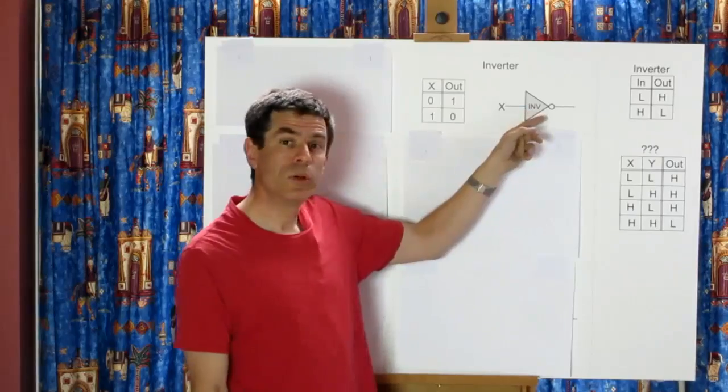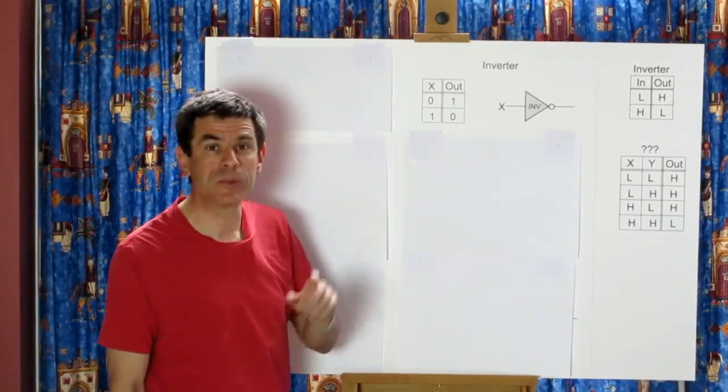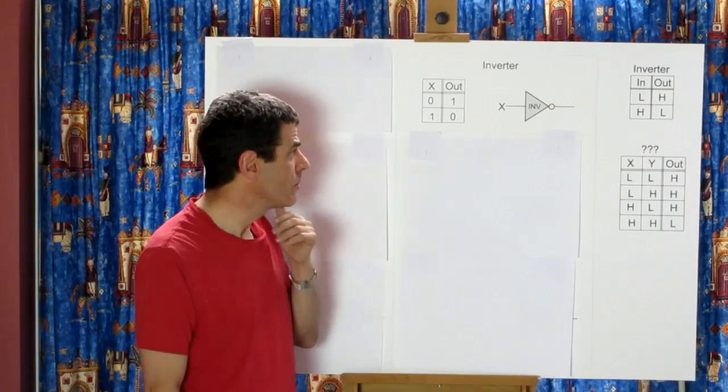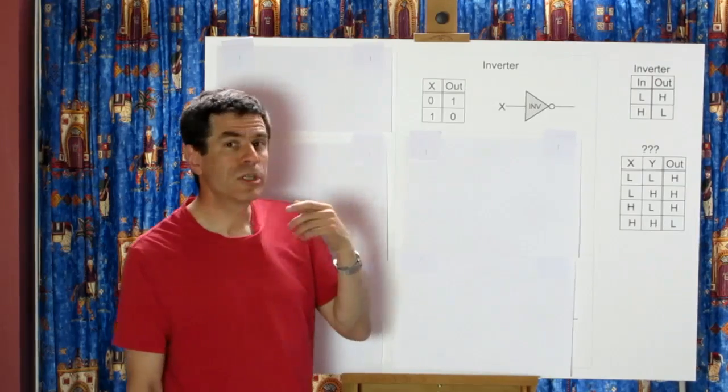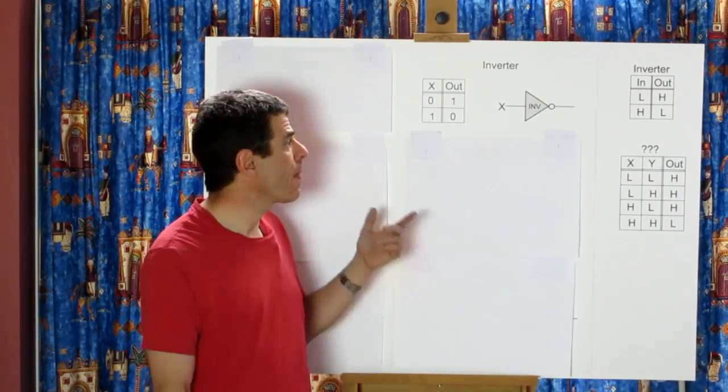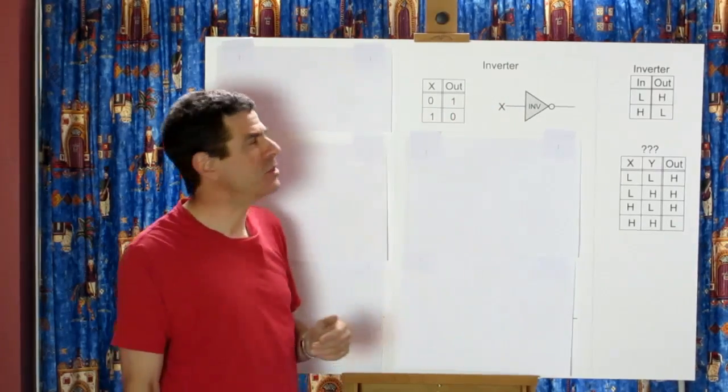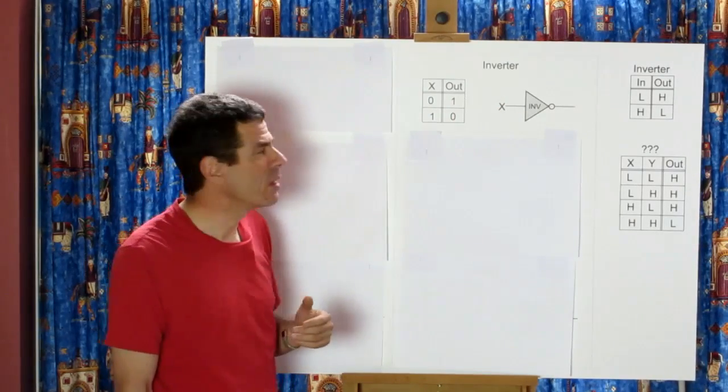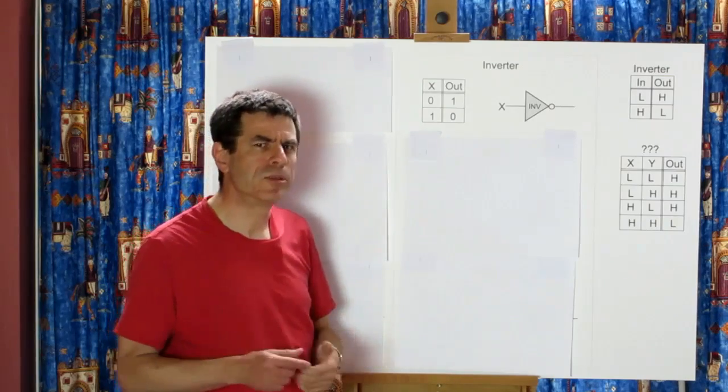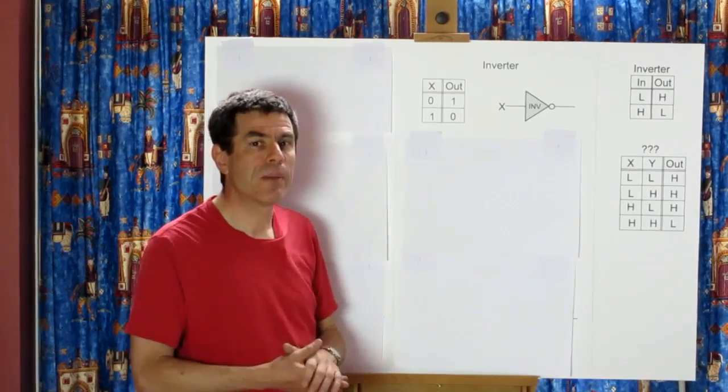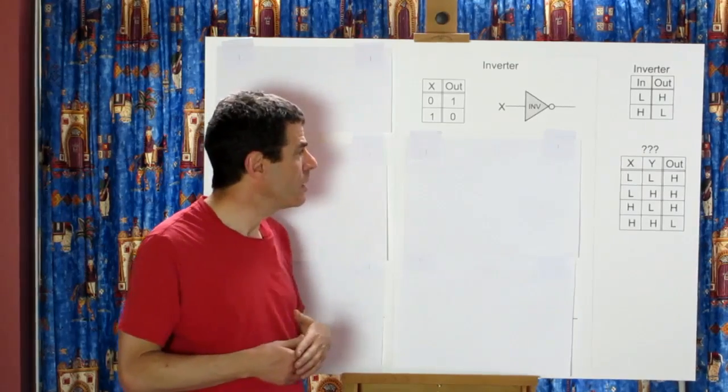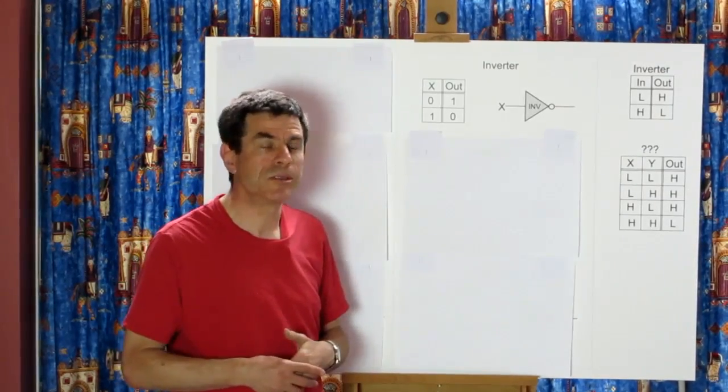And this is the symbol we'll use when drawing diagrams of the logic system. Now with just one input this is the most exciting function that can be defined. When we have two inputs to a function there are a lot of possible functions that can be defined but two are used more than most.